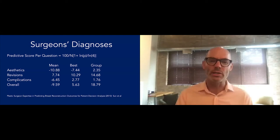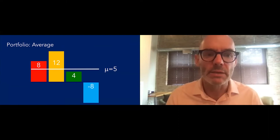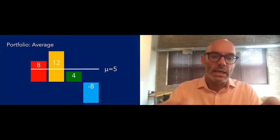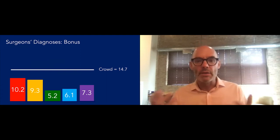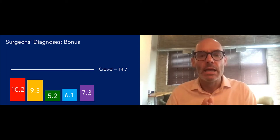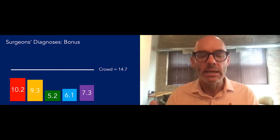Same is true if you look at surgeons' diagnoses. This is work using a more sophisticated scoring rule. What you get is that the crowd is better than any single surgeon. When you think about predicting, the reason you want a crowd is not risk aversion. The crowd is actually better, typically, than anyone in it because of the diversity.